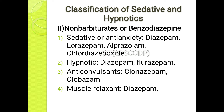The second benzodiazepine subgroup is hypnotics, which produce sleep. Examples include diazepam and flurazepam. The third subgroup is anti-convulsant or anti-epileptic drugs — for example, clonazepam and clobazam. The fourth subgroup is muscle relaxants, for example diazepam.